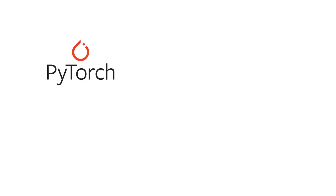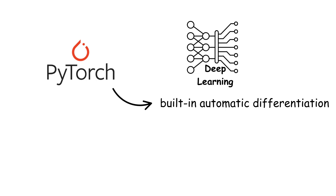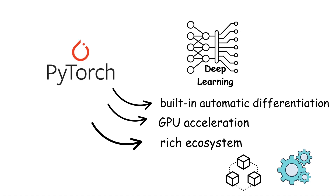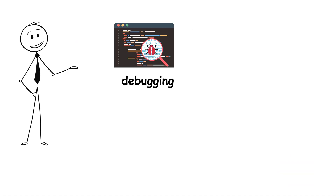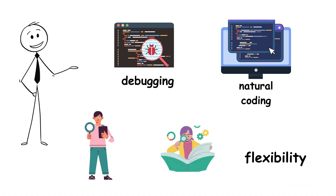PyTorch has exceptional support for deep learning with built-in automatic differentiation, GPU acceleration, and a rich ecosystem of tools and libraries. Its ease of debugging and natural coding style make it preferred by many researchers and academics who value flexibility during experimentation.